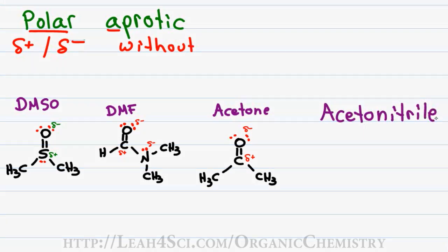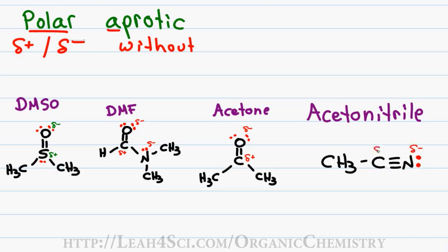And lastly we have acetonitrile which has a carbon triple bound to a nitrogen leaving that nitrogen very partially negative and the carbon partially positive. Now these are not the only polar aprotic solvents but these are the most common ones that come up when studying substitution and elimination reactions.